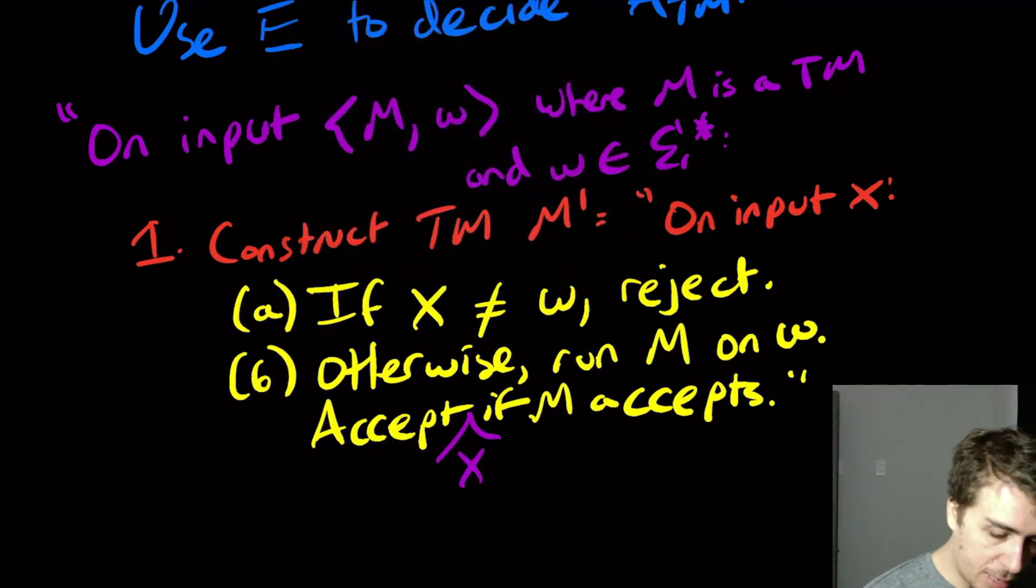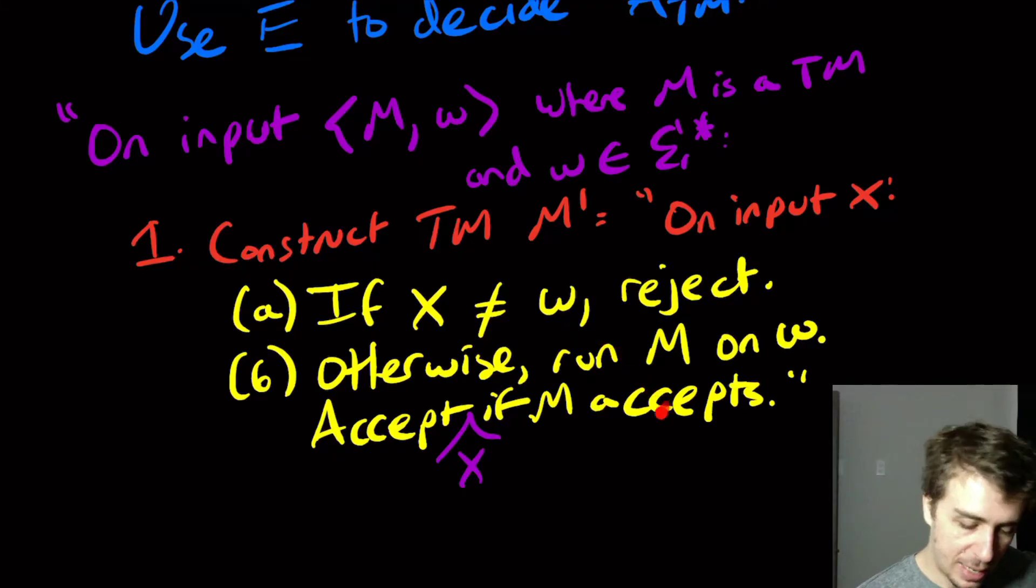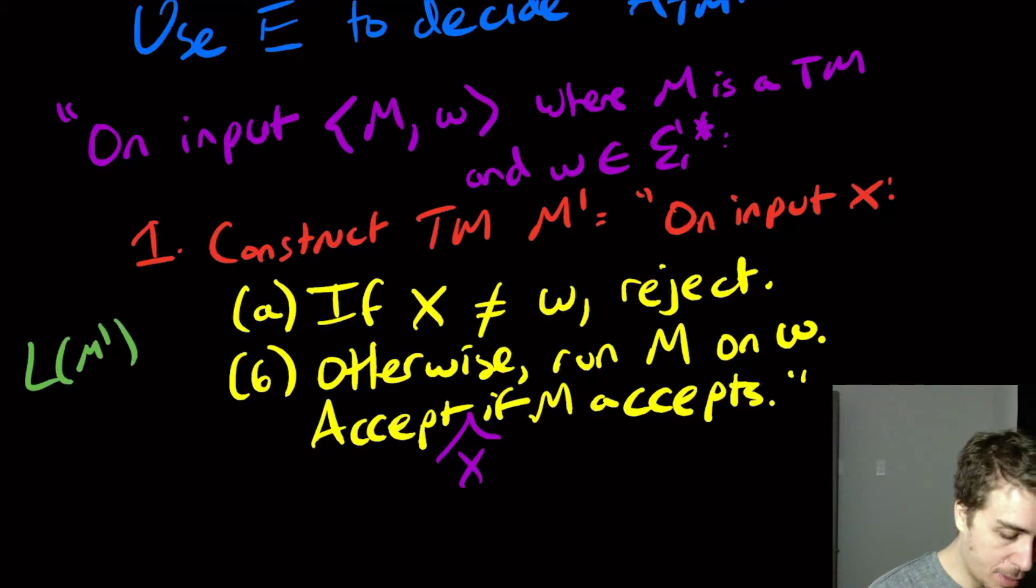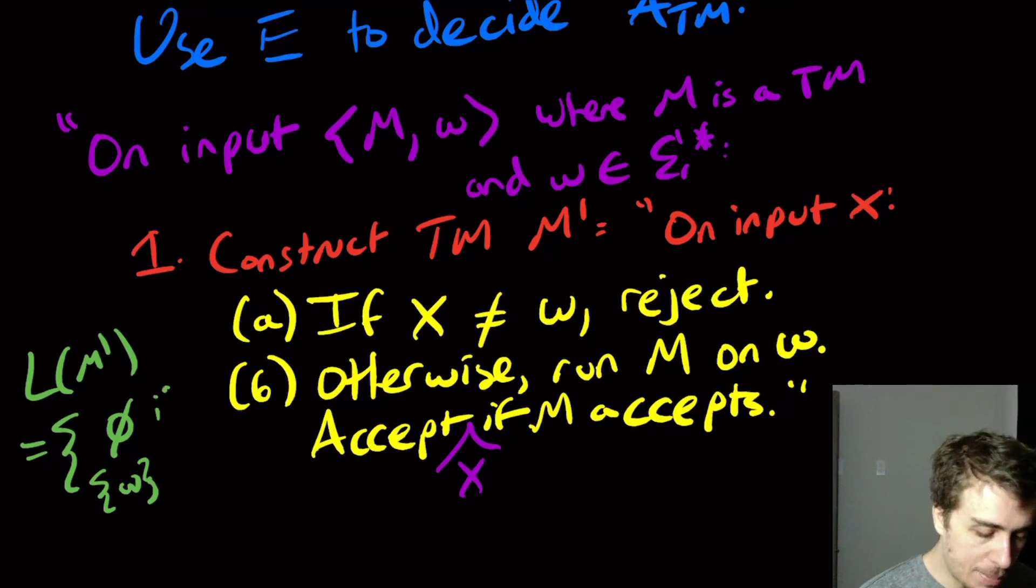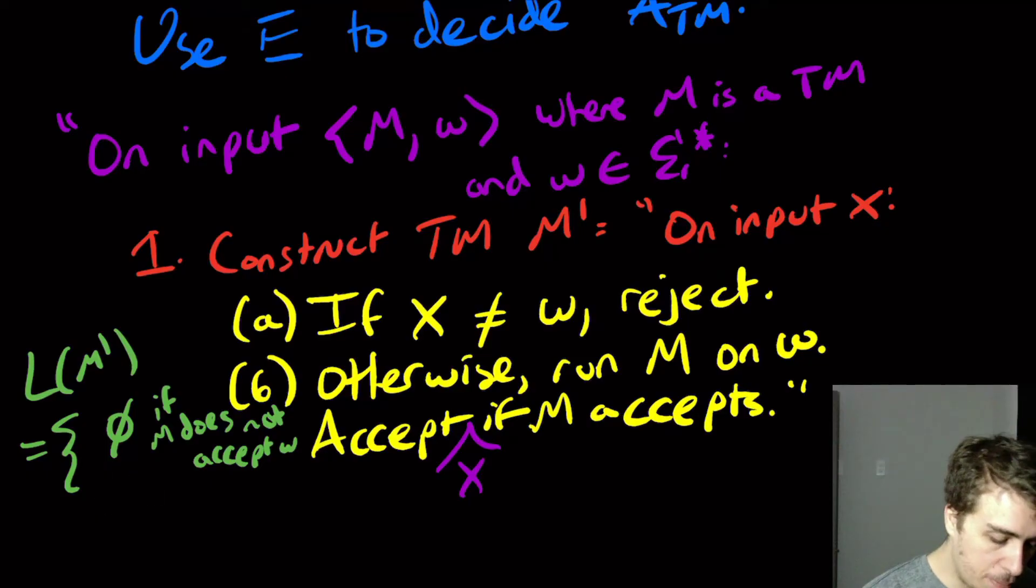So what we can figure out here is, well, what is the language of M'? Well, it's going to reject every single string except W, possibly. So the language of M' is going to be equal to the empty set or just W. And the criterion for when it's empty is if M does not accept W. So yeah, so we're actually going to do the opposite condition here, but that's okay. It's going to be empty if M does not accept W. And it's going to be something that's not empty otherwise.